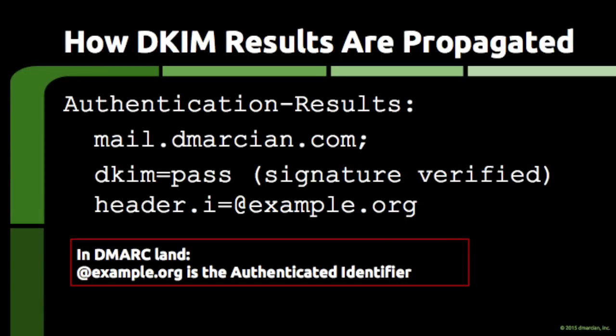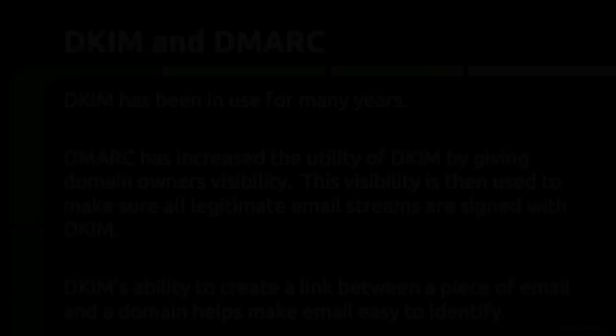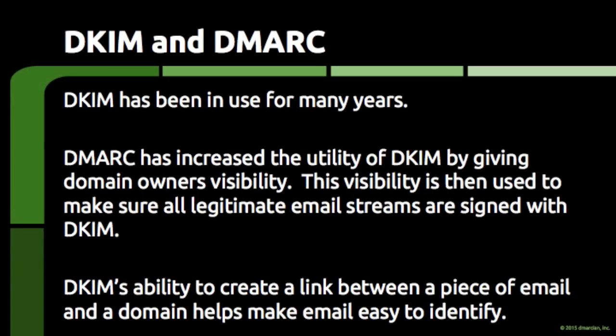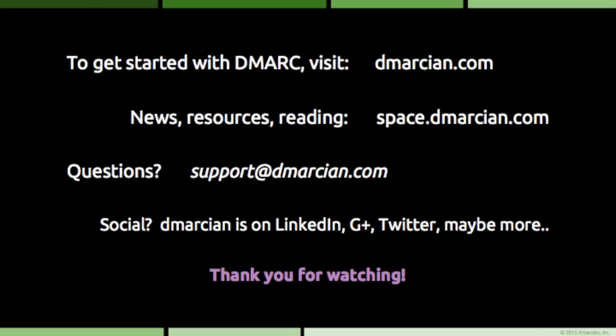Whether or not a link is identified, the result of the DKIM check is inserted into the email as part of the authentication results header. To conclude, DKIM is relatively sophisticated and has been in use for quite a few years. DKIM's utility has increased significantly since the advent of DMARC, as domain owners now have visibility into how their domain is being used, ensuring all legitimate email streams are using DKIM. Hopefully this short overview provided insight into how DKIM works and how its ability to create a link between a domain and a piece of email is important in the ongoing effort to make email easy to identify. To get started with DMARC, visit dmarcian.com.